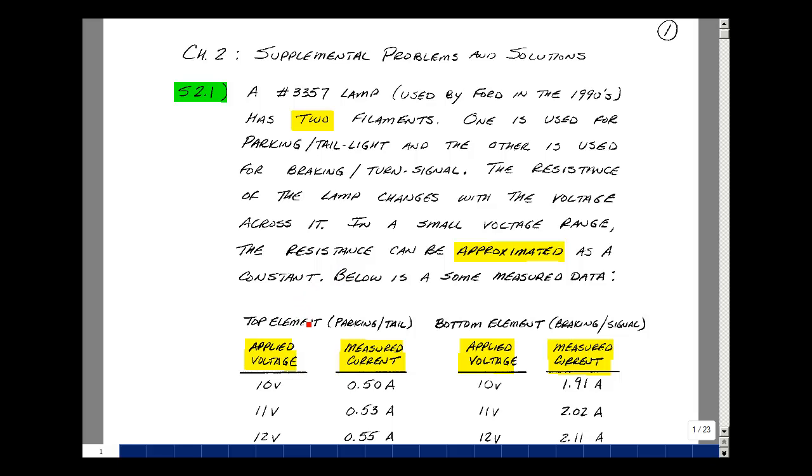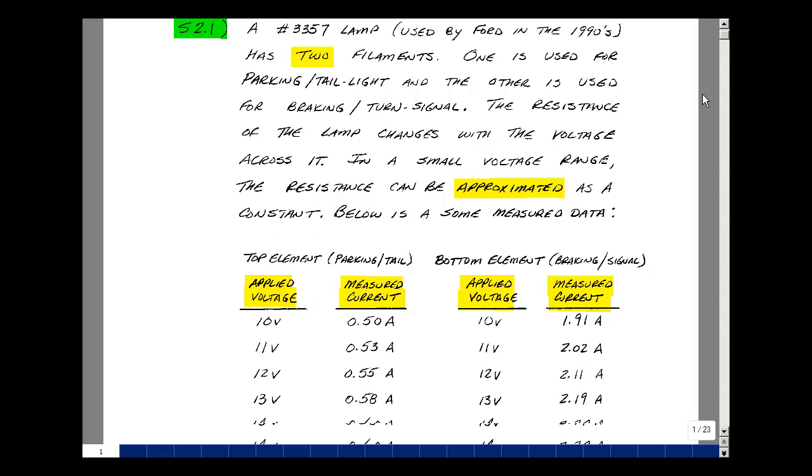When I applied 10 volts to the top element (parking and tail light), it drew about half an amp. As I increased to 11 volts it was 0.53 amps, 12 volts 0.55 amps, 13 volts 0.58 amps, and 14 volts 0.6 amps.